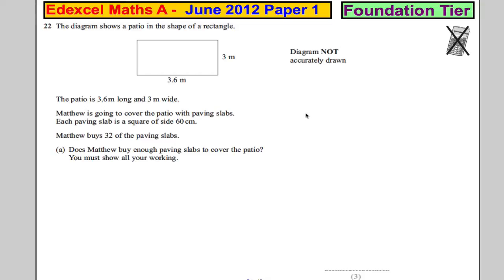Question 22. The diagram shows a patio in the shape of a rectangle. The patio is 3.6 metres long and 3 metres wide. Matthew is going to cover the patio in paving slabs. Each paving slab is a square of 60 centimetres.